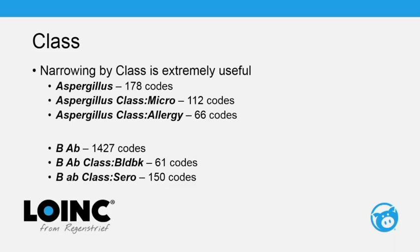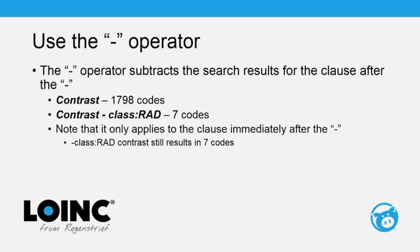Narrowing by class is extremely useful, though it's often overlooked since it's not one of the primary six axes and can be off-screen in the search grid. For example, searching 'Aspergillus' returns nearly 200 codes, but narrowing to class 'micro' returns 112, and class 'allergy' returns 66. Similarly, 'B antibody' returns over 1,000 codes, but 'B antibody' in blood bank class returns 61 versus 150 in serology class.